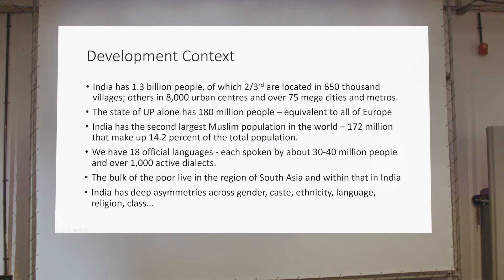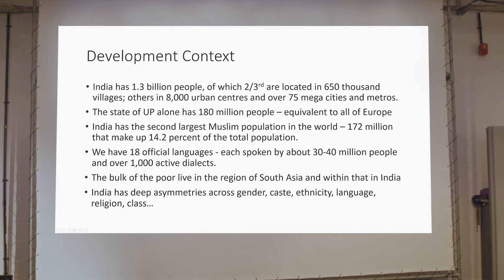India has the second largest Muslim population, and we have 18 official languages with about 30 to 40 million people speaking one of these official languages and over 1,000 active dialects. There are many more which are not quite active, and the bulk of the poor live in the region of South Asia — of course, and within that, in India.